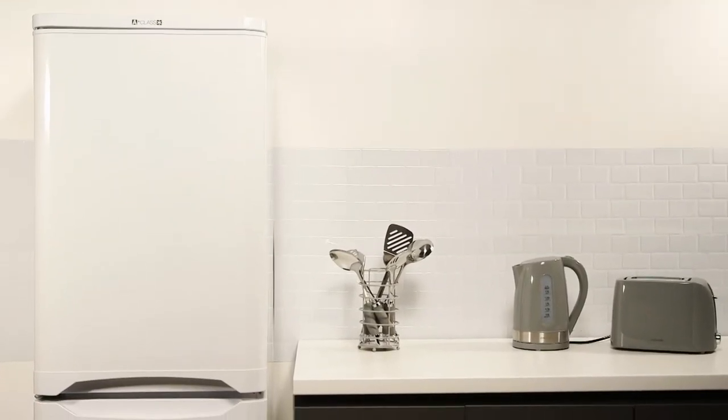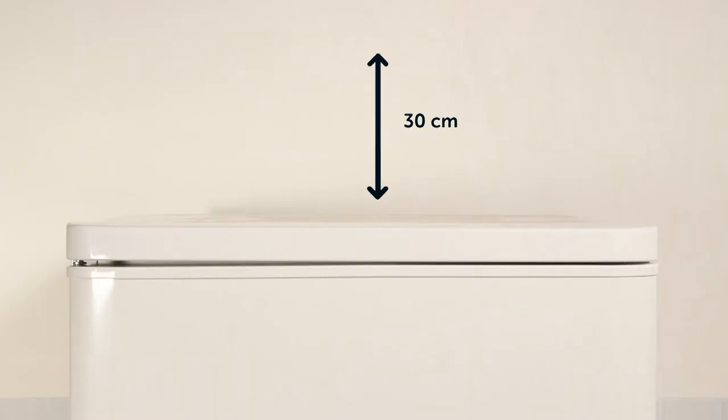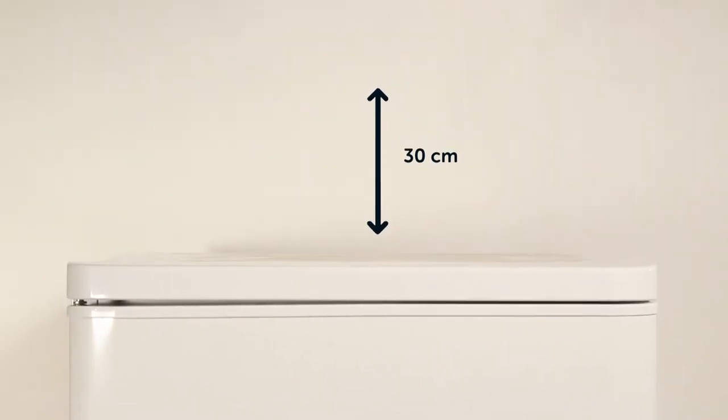Firstly it is important to leave space around your fridge freezer. You should leave 15 centimeters either side of the fridge and 30 centimeters on top and behind.